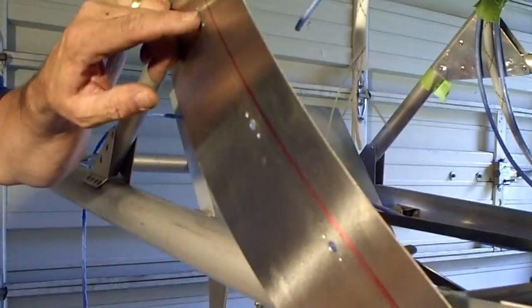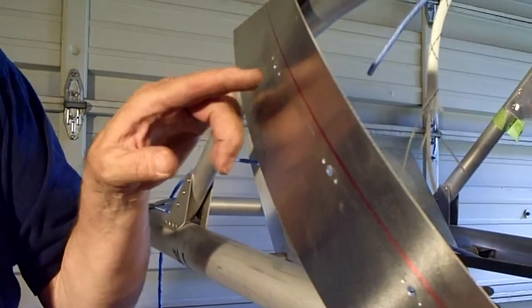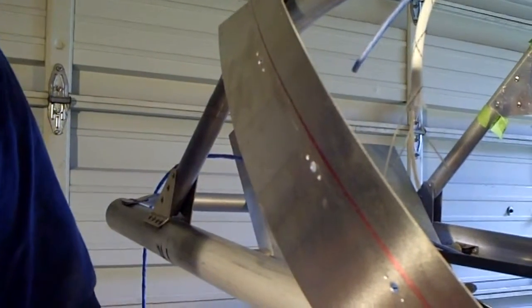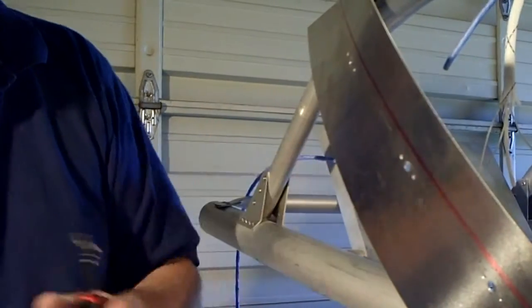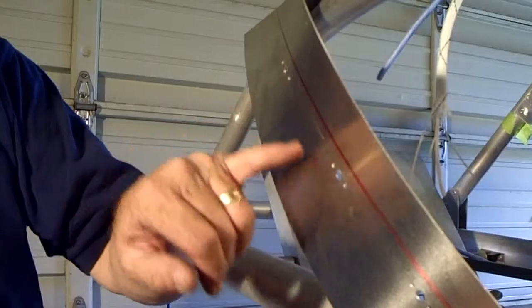In the first half of this video we started talking about installing a nut plate. I've gone ahead and drilled the holes out to a number 10 and then I used my nut plate tool to locate and drill the number 40 holes for my rivets.